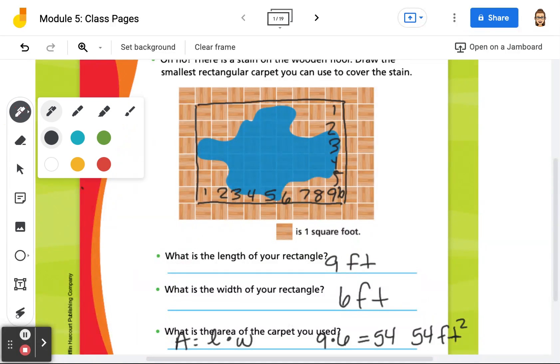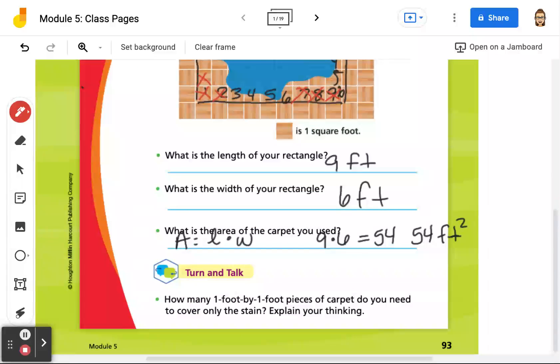Well, we have 54. We would not need this one, this one. So we would be subtracting 13 from 54. Because there are 13, so there are 13 pieces of carpet not covering the stain.